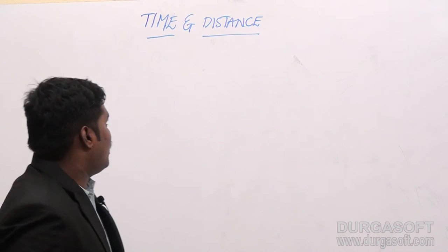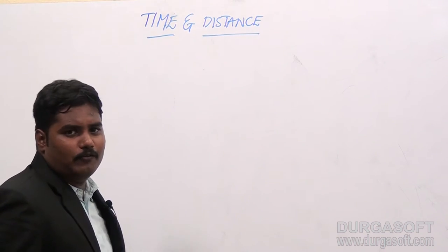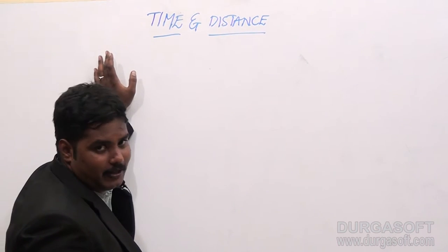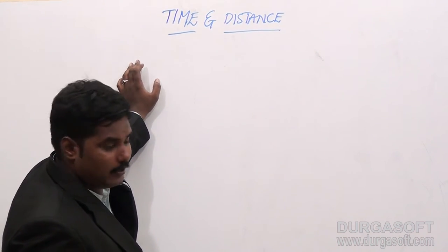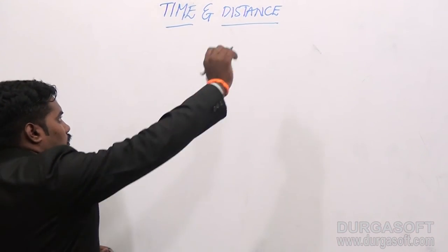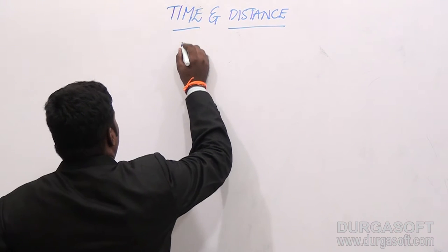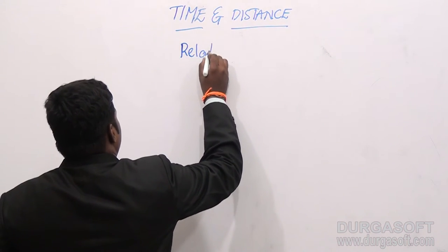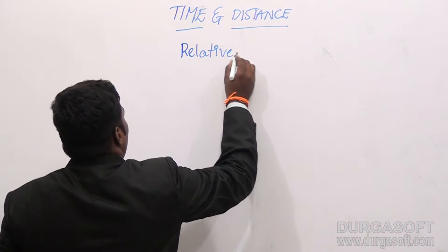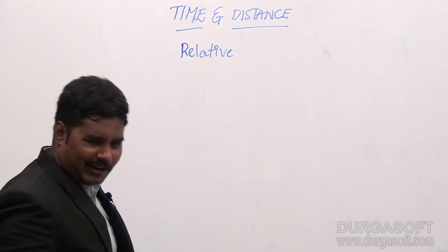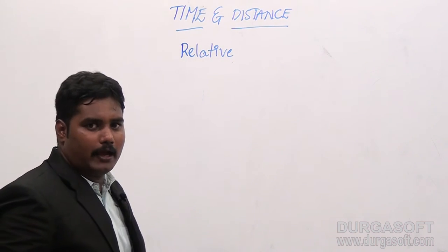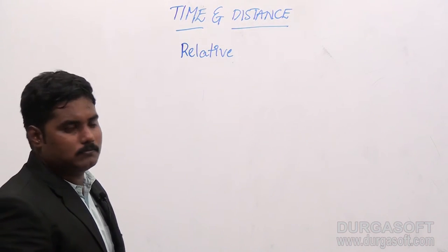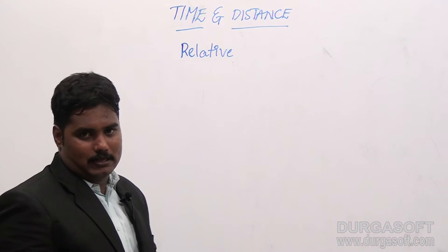Previously we discussed the time and distance concept from basics to average. Now let us have a discussion on the relative speed concept. Relative speed is the most important concept for problems in trains, some problems in time and distance, and some problems in races as well.